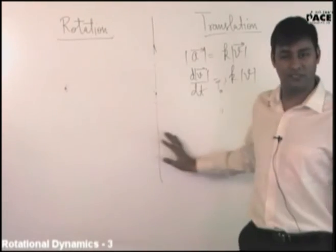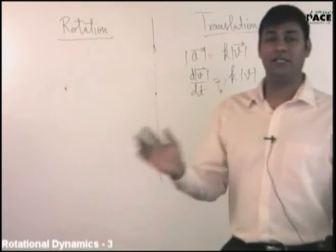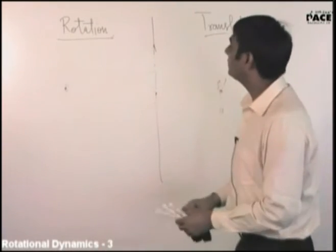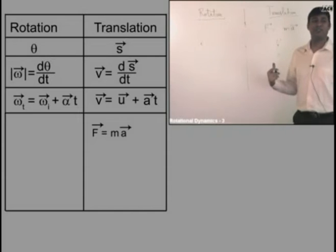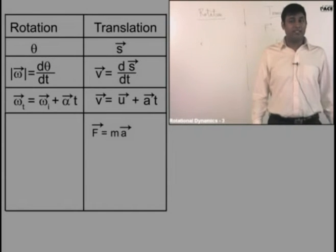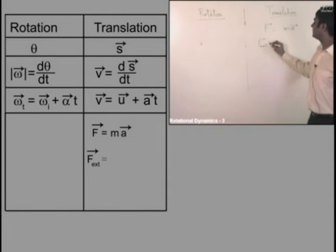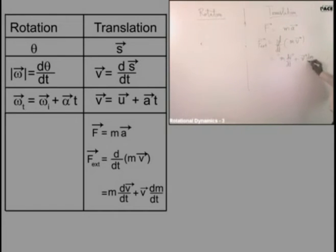If angular acceleration is constant, we use equations of motion like in translational motion. Now, you know net force equals mass times acceleration. Actually the more general form is: external force equals d by dt of momentum. If mass is constant, the dm by dt term is zero and you get F equals ma. Otherwise the general form applies.